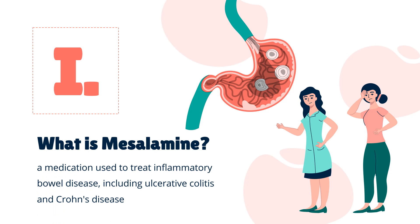Mesalazine, also known as mesalamine or 5-aminosalicylic acid, is a medication used to treat inflammatory bowel disease, including ulcerative colitis and Crohn's disease. It is generally used for mildly to moderately severe disease. It is taken by mouth or rectally.